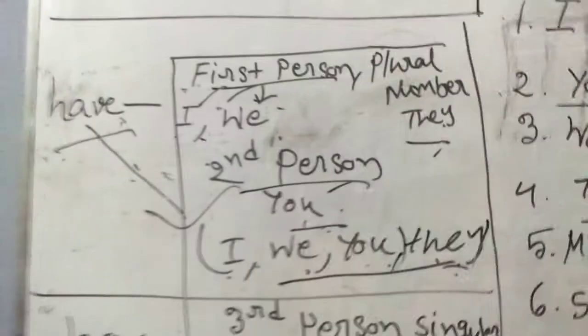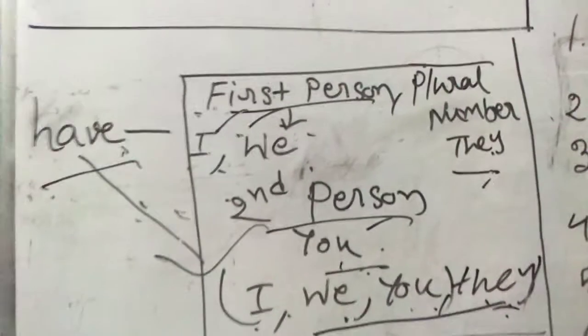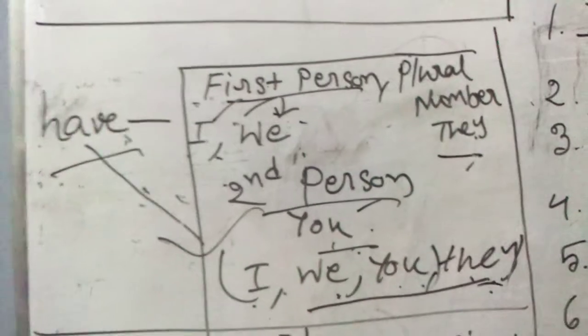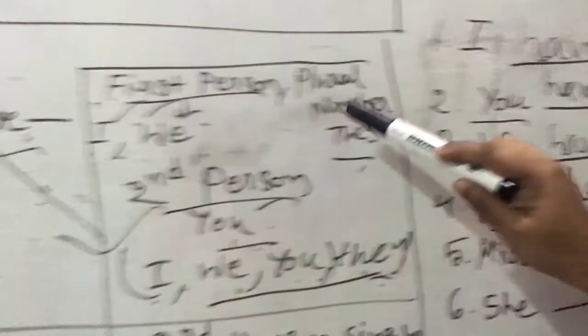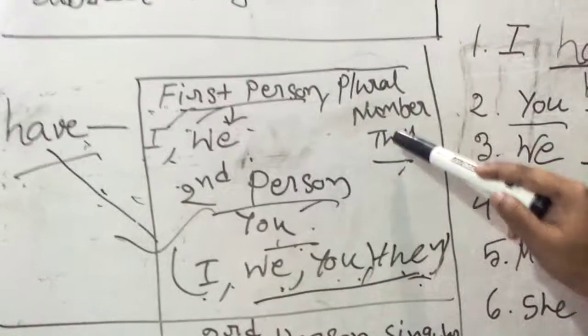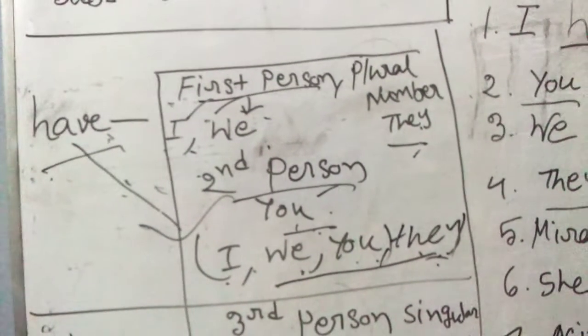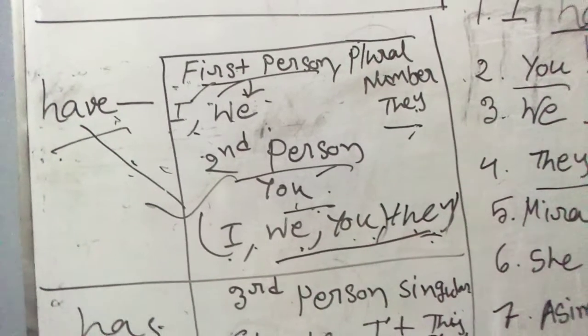You may ask: is 'they' first person or second person? Neither — but it is a plural number. 'They' is not singular. I told you that for plural numbers we use 'have', and 'has' is used for singular numbers — specifically third person singular number. As 'they' is a plural number, we use 'have' after it.